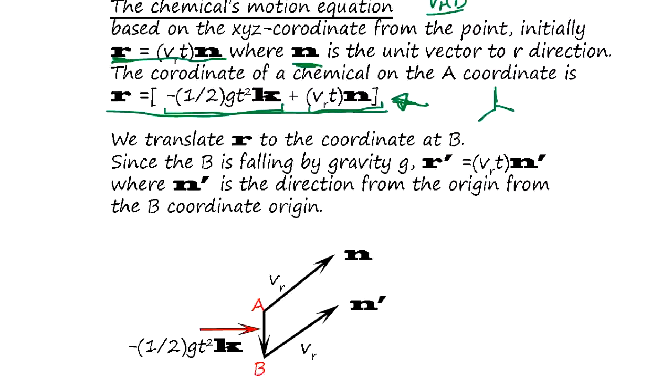Now we translate this r to the coordinate at B. Since the B is falling by gravity g, so this term is going to disappear when we translate to the B.